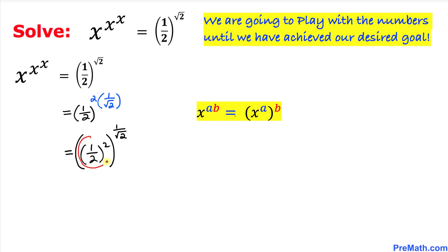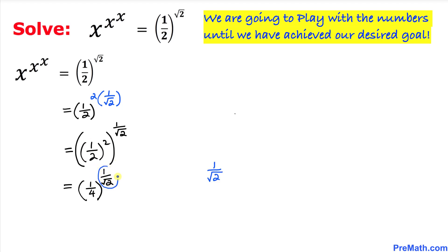Inside this parenthesis, 1 over 2 to the power 2 gives us 1 over 4. Now let's focus on the exponent 1 over square root of 2. I can write this as square root of 1 divided by square root of 2, which equals the square root of 1 over 2. This radical can be written as 1 over 2 to the power 1 over 2 in exponent form.